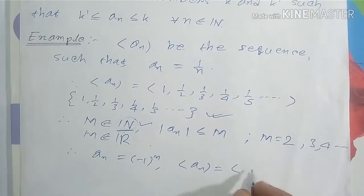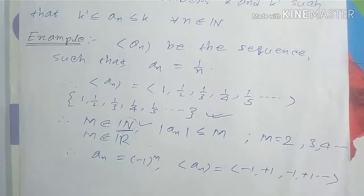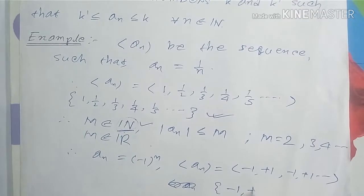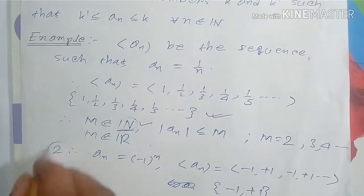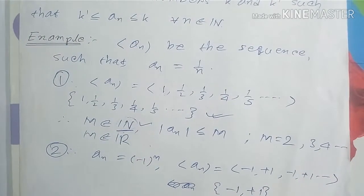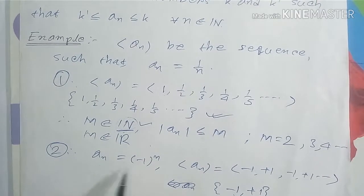For a_n = (-1)^n, the sequence looks like: -1, +1, -1, +1, and so on. Its range set is {-1, +1}. There must exist one real number greater than both elements, so we can conclude that this sequence a_n is again a bounded sequence.